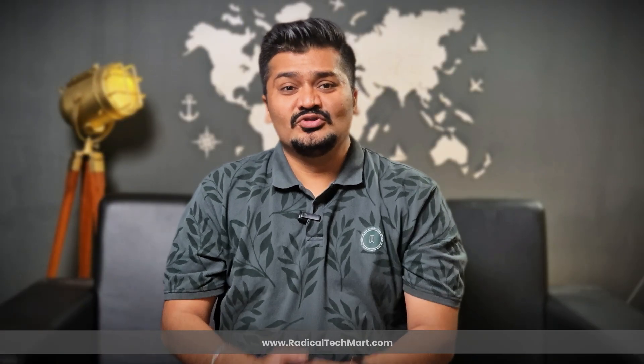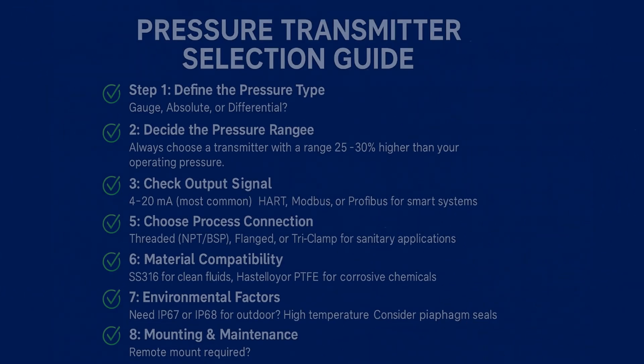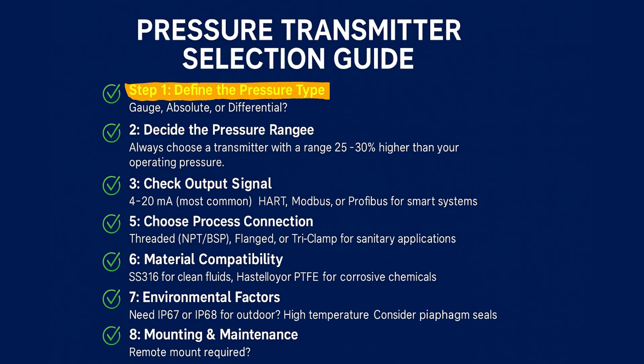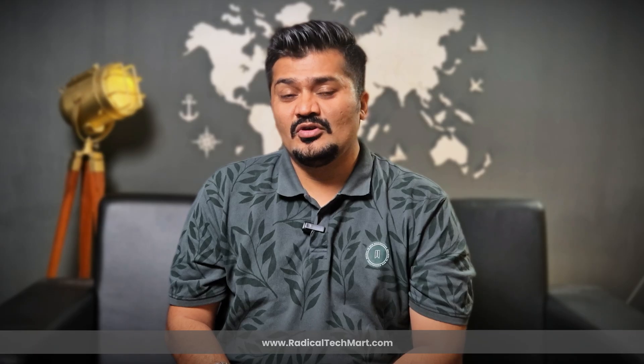Before selecting a pressure transmitter, you need to consider the following steps. Step 1: Define the pressure type — gauge, absolute, or differential — and match it to your application needs.